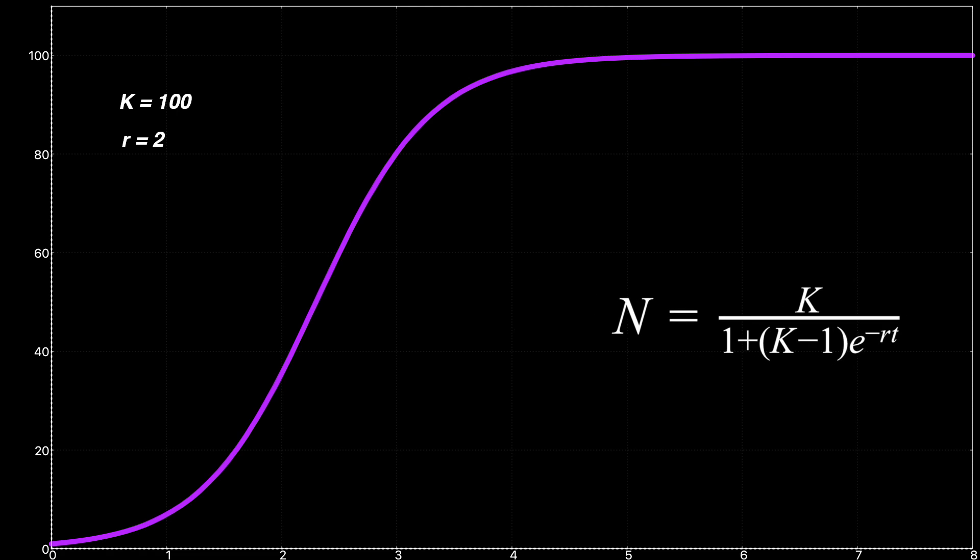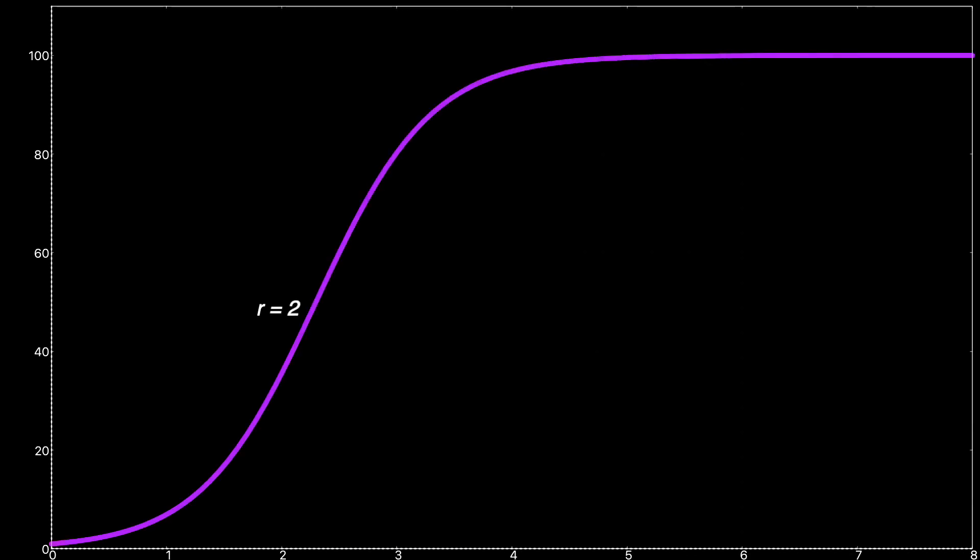The logistic curve grows quite rapidly at first, but then slows as it approaches the carrying capacity. This can be used as a very simplified, even crude model for overall infections. Here we draw the curve for different rates of growth. The higher the growth rate, the faster it approaches the maximum.